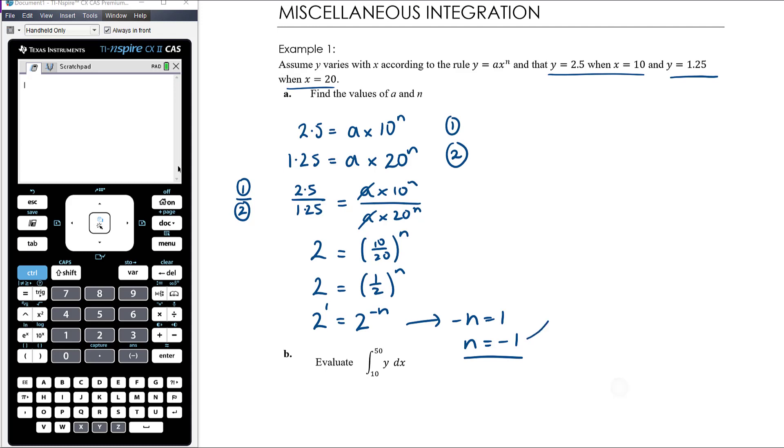That's n. Then once we've got n, we now know our equation is y equals ax to the negative 1, and we can sub in one of these points to find the value of a.